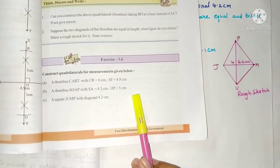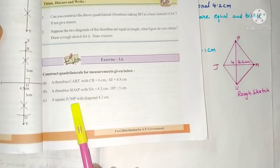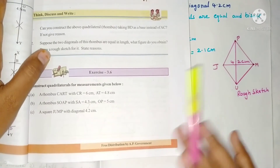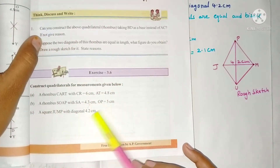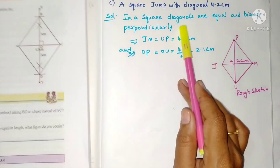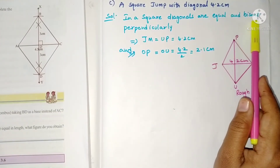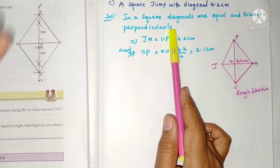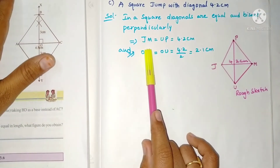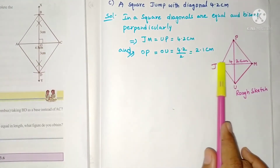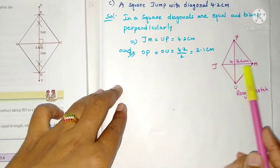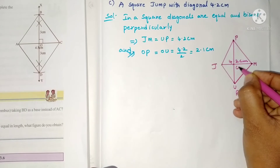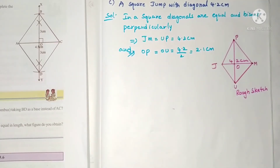Third and last problem: construct a square JUMP with a diagonal of 4.2 centimeters. In the above two problems two diagonals were given, but here only one diagonal is given. This is because in a square the diagonals are equal, and they bisect each other perpendicularly just like in a rhombus. So both diagonals JM and UP are 4.2 centimeters, and the intersecting point O gives half of 4.2, which is 2.1 centimeters.